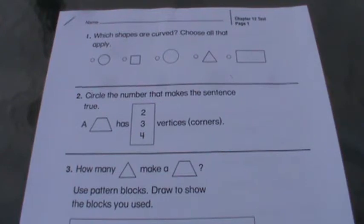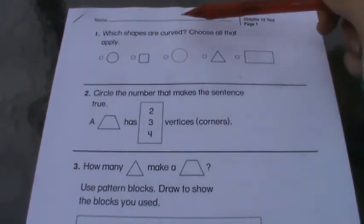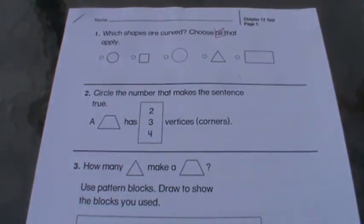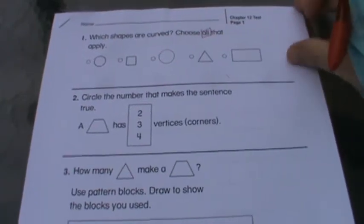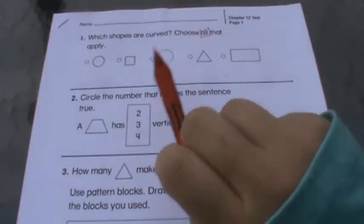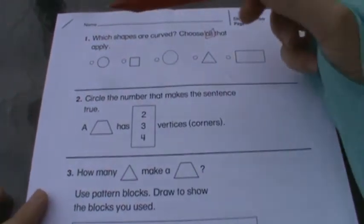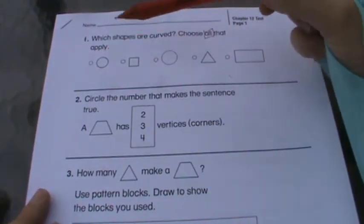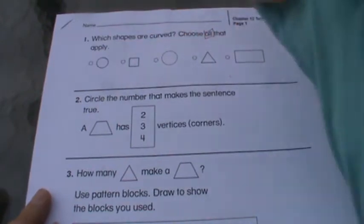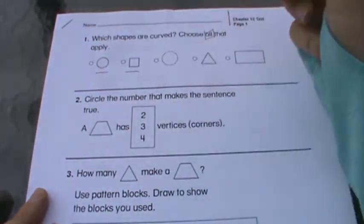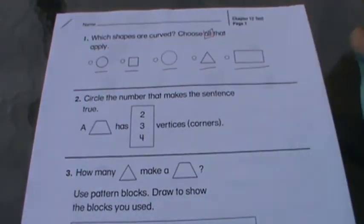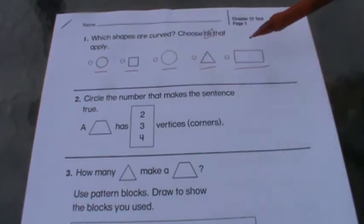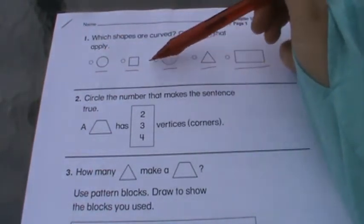So number one, which shapes are curved? Choose all that apply. So that could be one of them, that could be all of them. You choose all of these that are curved. Since we are talking about shapes, the circles here to the left are the bubbles you need to actually be bubbling in. They're showing you a circle, a square, a circle, a triangle, and a rectangle. So those are the five choices and any of those that are curved, you need to bubble in.